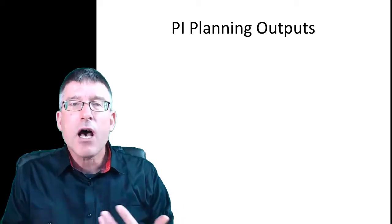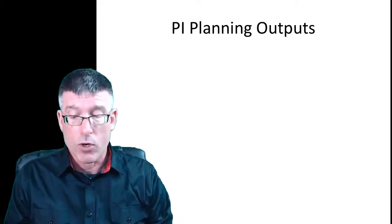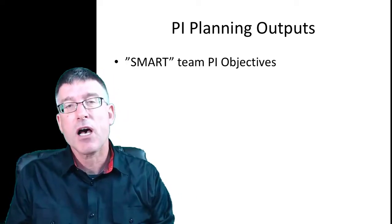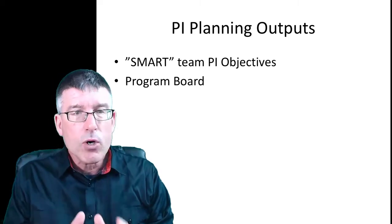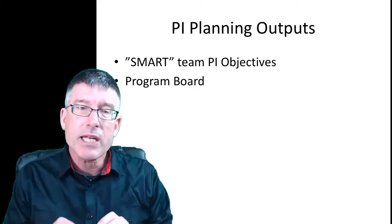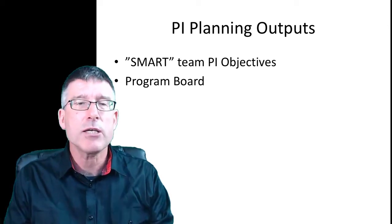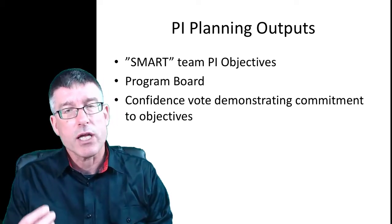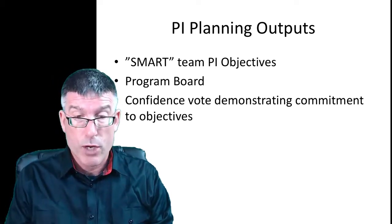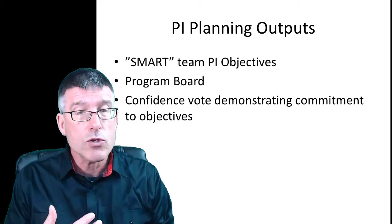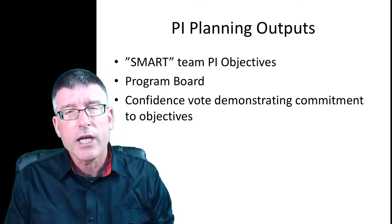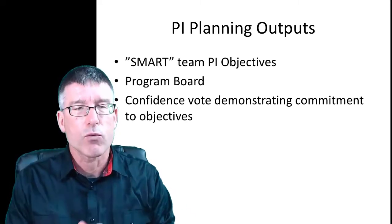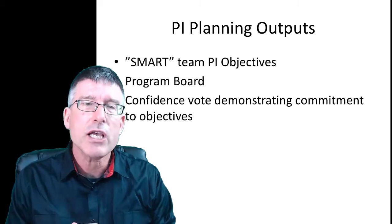Let's look at the PI planning outputs in a little bit more detail. We mentioned that there will be SMART team and PI objectives. There's a program board showing the dependencies between events and the teams that have to work together to deliver those. There's a confidence vote at the end to demonstrate commitment to the objectives. Those who do the work plan the work, and it's not up to the business to commit the team — the team makes a commitment that they will reach the objectives that they've developed.